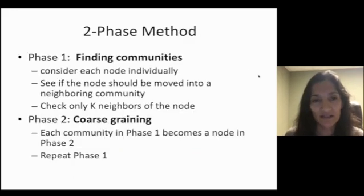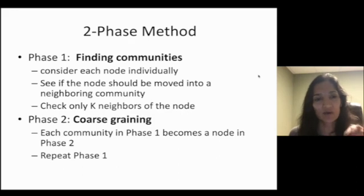This is a two-phase method. In the first phase, you're kind of trying to find the right community for each individual. You consider each individual node and you see what community should this be moved to. But the trick is you don't check all communities that the node should go to. You only check its k nearest neighbors, where k is a constant. And then the next phase is coarse-graining. Each community in phase one becomes a node in phase two. So you collapse or coarse-grain the graph and you have a smaller problem to work with. And you try to find communities for each of those vertices.